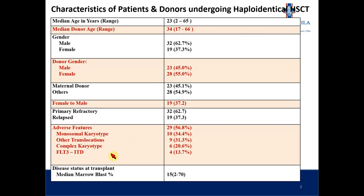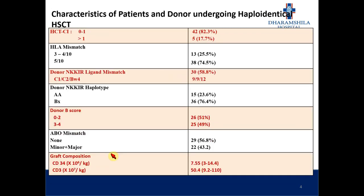The percentage of blasts at the time of transplantation was 15%. We also looked at the comorbidity index — more than 1 was seen in 17% of patients. More than 75% of patients had complete HLA mismatch. We also looked at NK cell genotype and phenotype, trying to find NK-KIR ligand mismatch donors in the form of C1, C2, and BW4. 59% of patients had NK-KIR ligand mismatch donors.